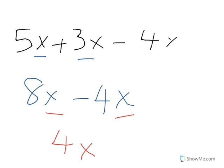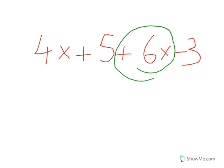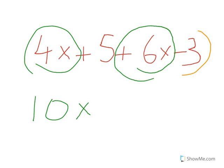Now let me do another one: 4x plus 5 plus 6x minus 3. I'll add the terms with the same units. 4x plus 6x: 4 plus 6 is 10x. Then I'll add the numbers: minus 3 and plus 5.